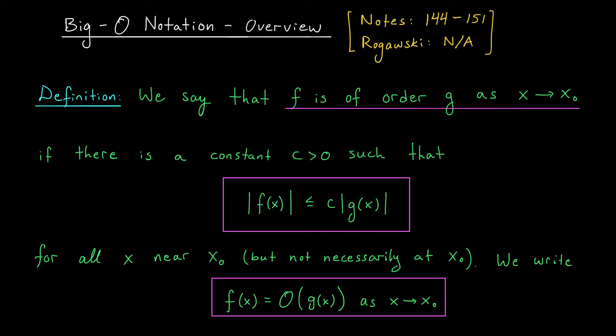What this definition is really saying is that F is of order G, provided that the size of F is comparable to the size of G around this point X-naught. If that's the case, we'll write F of X equals big O of G of X as X approaches X-naught. The purpose of this video is to go through lots of examples and explore the basic properties of big O.